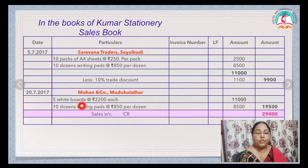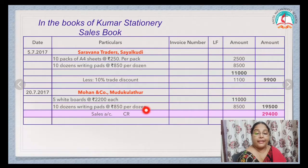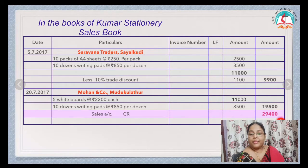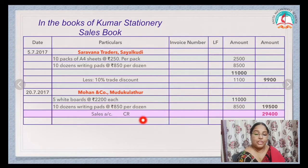Next: Mohan and Co, Mudukulathur. 5 whiteboards at the rate of ₹2,200 each — ₹11,000. 10 dozens of writing packs at the rate of ₹850 per dozen — ₹8,500. Here we don't have any discount, so just add and take it to the outer column — ₹19,500. The total of the Sales Book is ₹29,400, which has to be transferred to Sales Account creditor.